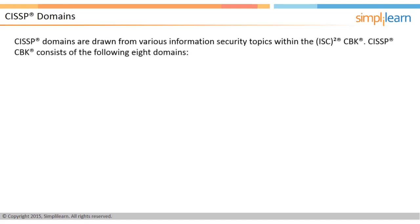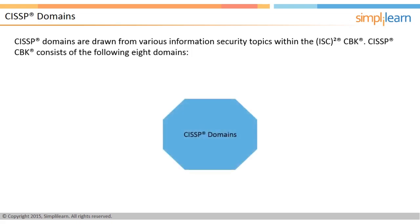CISSP domains are drawn from various information security topics within the ISC² CBK. Updated annually, the domains reflect the most up-to-date best practices worldwide, while establishing a common framework of terms and principles to discuss, debate, and resolve matters pertaining to the profession. CISSP CBK consists of the following eight domains.